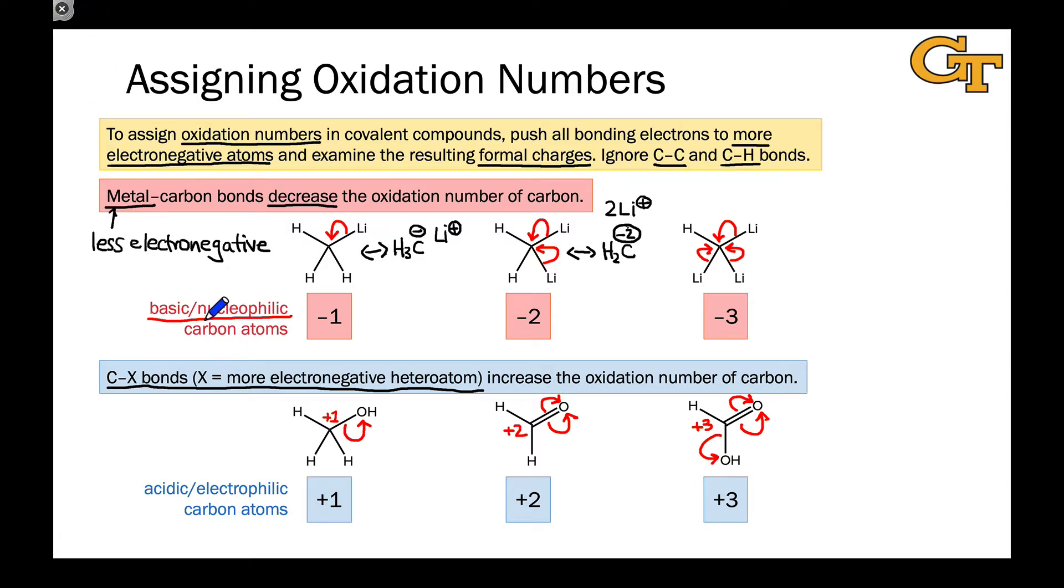And as you might imagine, if atoms with negative oxidation numbers are basic or nucleophilic, atoms with positive oxidation numbers tend to be acidic or electrophilic. These are atoms that want to accept electron density,